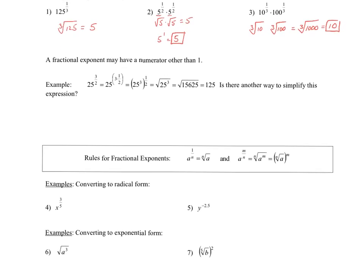We have 25 to the 3/2 power. You'll notice here that we've shown a very complicated way to simplify this expression — splitting up 3/2 as 3 times 1/2, making that 25 to the third to the 1/2 power, taking the square root of 25 to the third power, etc. Well, if we think of this in terms of radical form, we write this as the square root of 25, that whole quantity raised to the third power. The square root of 25 is 5, so this becomes 5 to the third, or 125. You can see that converting to radical form makes that a much simpler way to simplify the expression.